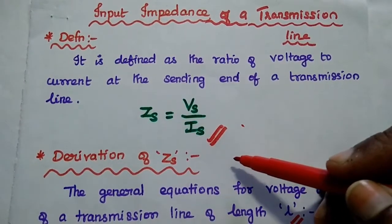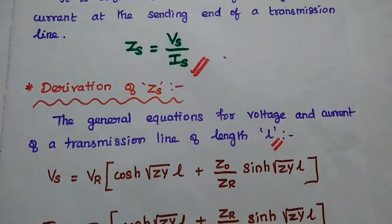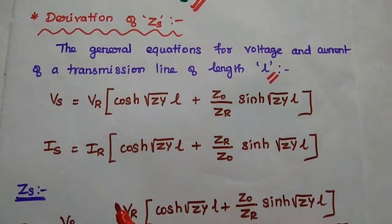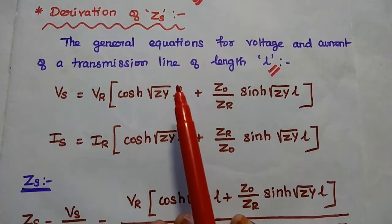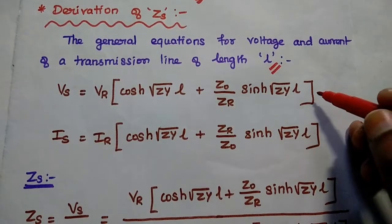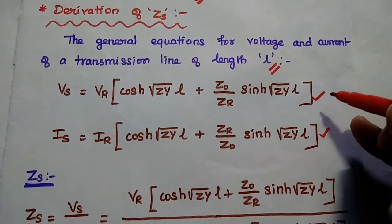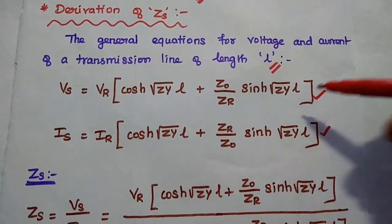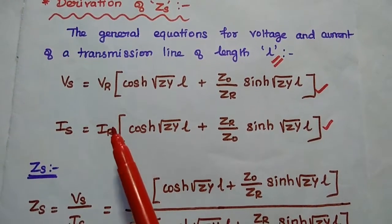Next, we will derive the value. We will substitute the Vs and Is values using the general equations of voltage and current of a transmission line of length L. We have already derived the general equations, so we will directly take those values. These two values should be kept in memory. From those equations, we will directly derive the input impedance.